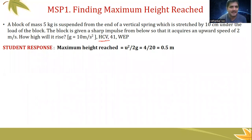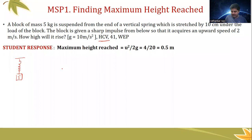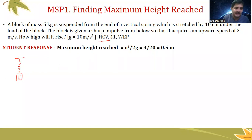Now let us start working on this. A block of 5 kg mass is suspended from the end of a vertical spring — so I have a spring connected to a 5 kg mass here. Initially when no mass was added, this was the natural spring. When the mass is added, the spring got stretched by 10 centimeters. The load applied is 5 kg.